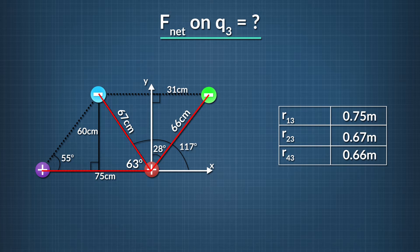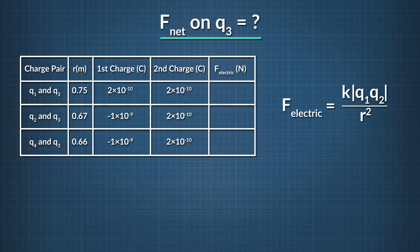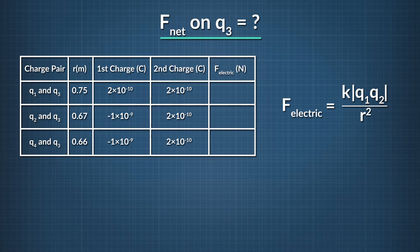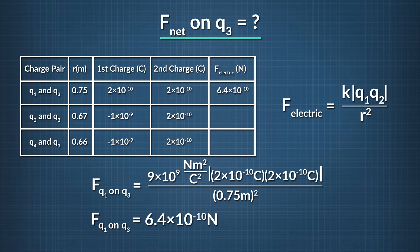Now that we have the distance between q3 and the other charges, and the charge values themselves, we can use Coulomb's Law to solve for the electric force magnitude between each pair of charges. Coulomb's Law says the electric force magnitude between two charges equals k times the absolute value of q1 times q2, all divided by r squared. Starting with the first row of values, we plug these into Coulomb's Law and find that the electric force magnitude between q1 and q3 is 6.4 times 10 to the negative tenth newtons.